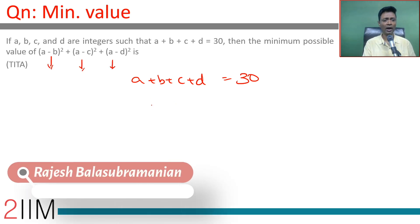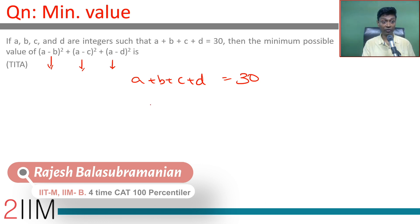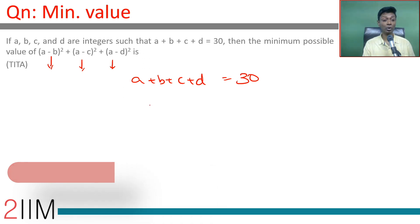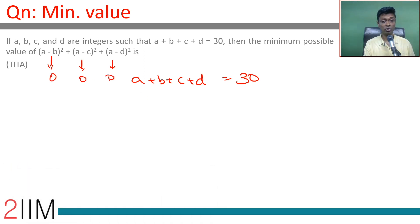We need to minimize the difference between A and B, A and C, and A and D. So we can try to have all four numbers as equal as possible — put each difference as 0 — but that's not possible because 30 is not a multiple of 4.